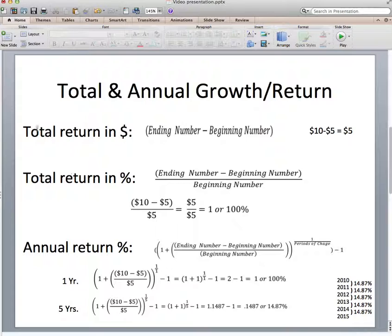Using algebra, looking at total return, we simply take the ending number minus the beginning number. So the $10 stock minus the beginning amount, $5, is $5 growth. Or looking at percentages, we take the ending number minus the beginning divided by the beginning. So 10 minus 5 divided by 5. And it's important to consider order of operations. So 5 divided by 5 is 1 or 100% growth.